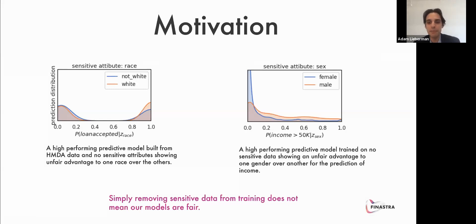For motivation, I took some publicly available HMDA data and a popular adult income data set and built some preliminary machine learning models. I left the sensitive attributes out, made sure I had balanced data, created some great features, and got some really good performance. However, I did some inspection into fairness. Looking at the HMDA data, I examined race. We can see the probability of a loan being accepted given race. Looking at the difference between the orange and blue area, we can clearly see that the probability a loan is accepted given the race is white has a much higher prediction distribution than non-white. As we get into the presentation, we're going to see how the use of a few methods can reduce this difference in classes.